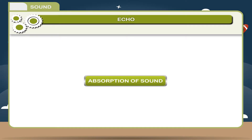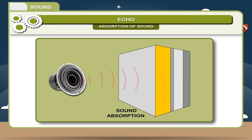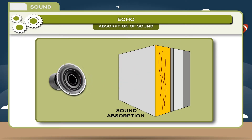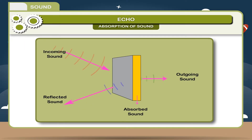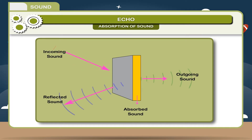Absorption of Sound: The absence of an echo means the sound waves are absorbed and not reflected back. The controlling of echoes in a building is called acoustics. When a sound wave strikes one of the surfaces of a room, some of the sound energy is reflected back into the room and some penetrates the surface. Parts of sound wave energy are absorbed by conversion to heat energy in the material while the rest is transmitted through.